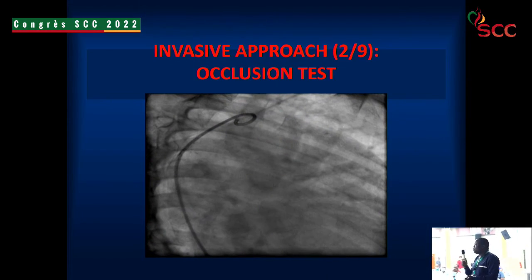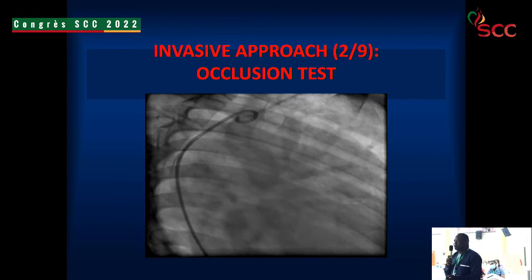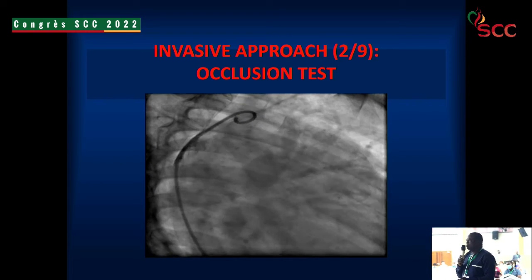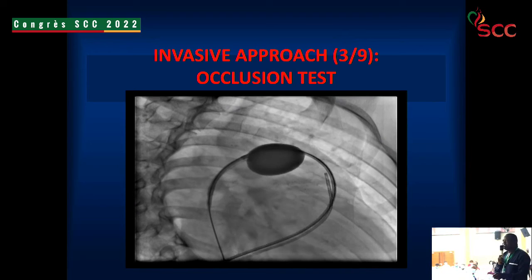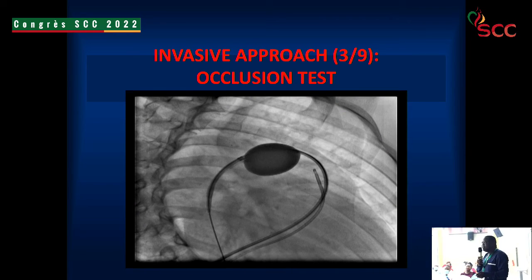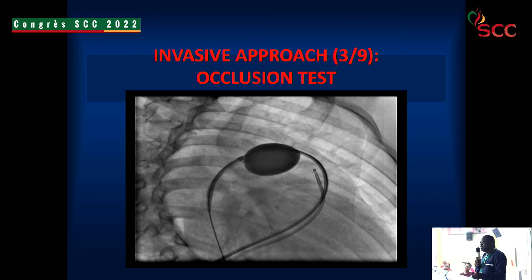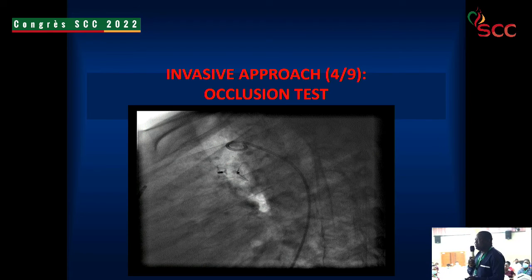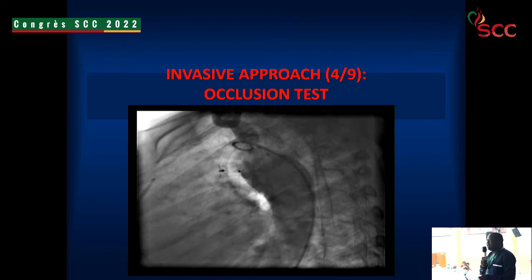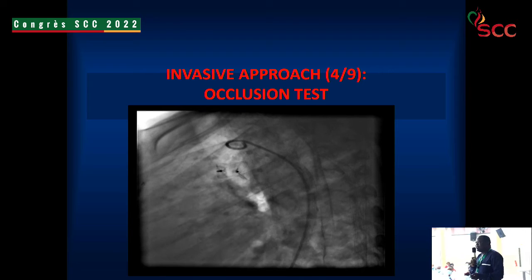We have this large patent ductus arteriosus. We saw this occlusion test — you can occlude the PDA with a catheter while monitoring the pulmonary arterial pressure. That gives you the answer as to whether this patent ductus arteriosus is closable or not. With a positive response, we then closed this PDA with an Amplatzer type 1 device.